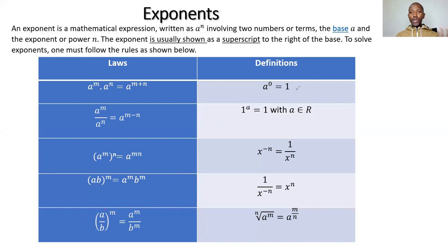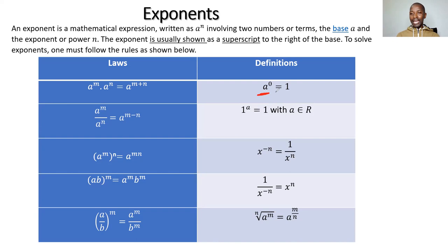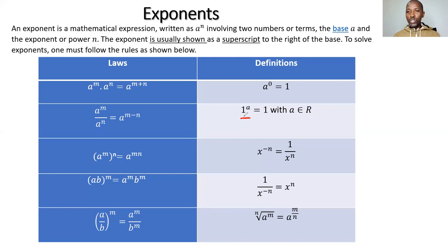Apart from the laws, we have key definitions. First: 'a to the power zero is 1' - a can be any number. Two to the power zero is 1, ten to the power zero is 1, one million to the power zero is 1. Anything to the power of zero gives me 1. Second: 1 to the power of any number is 1 - one to the power of 100 is 1, one to the power of 200 is 1.